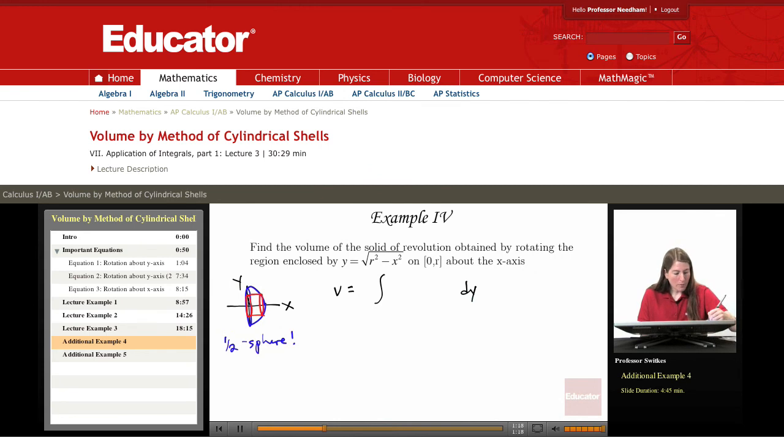The radius is y minus zero. So we have 2πy. That's 2π radius. 2π is a constant factor. I pulled it out in front.